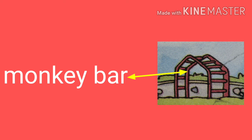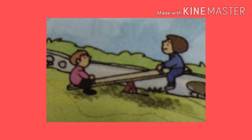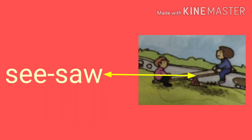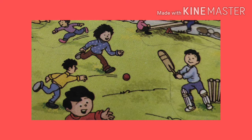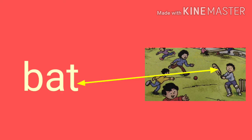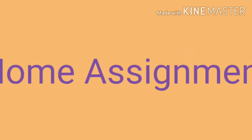This is the picture of a monkey bar — match the word monkey bar with the picture. Here, we can see the children playing seesaw — match the word seesaw with the picture. In this picture, we can see a boy holding a bat and playing cricket — match the word bat with the picture.